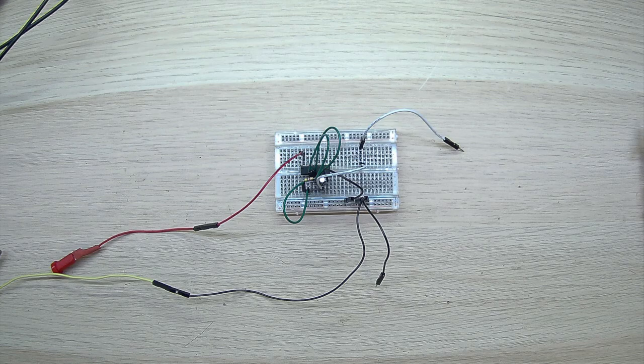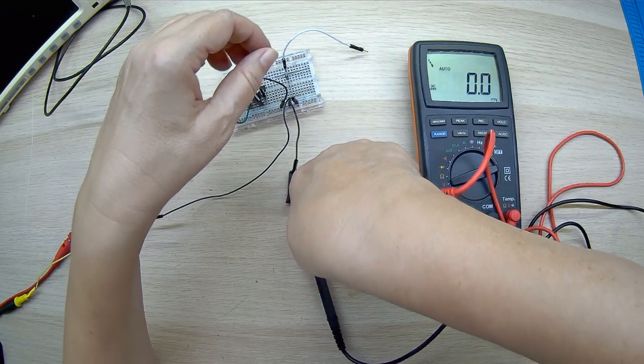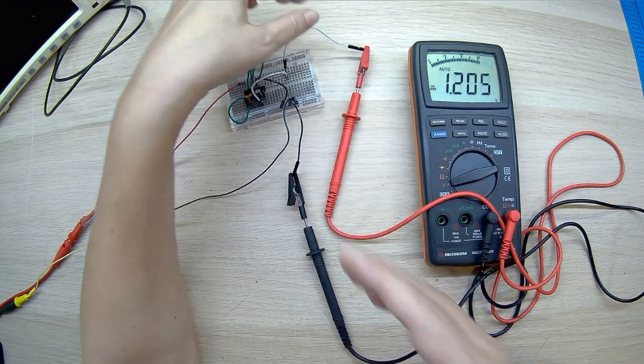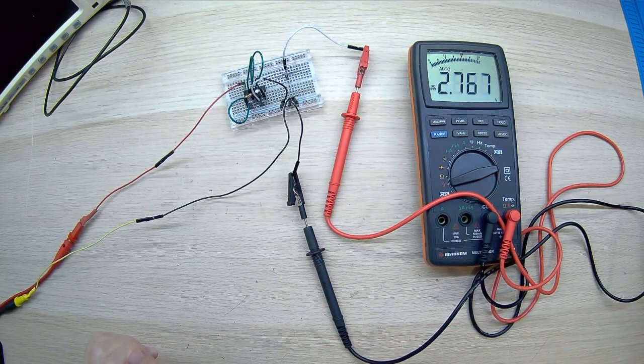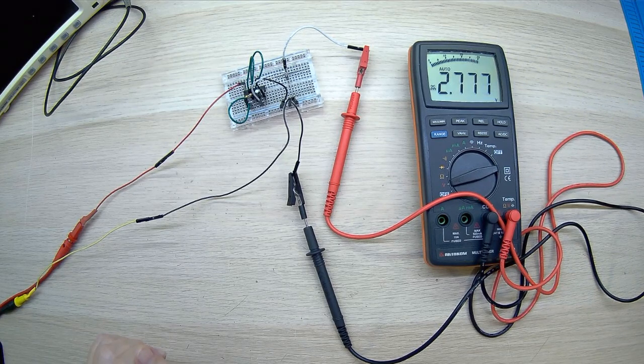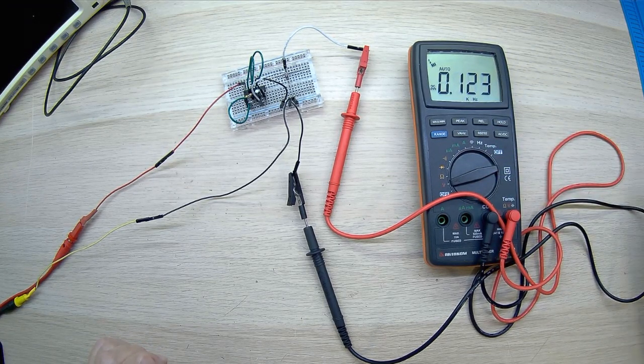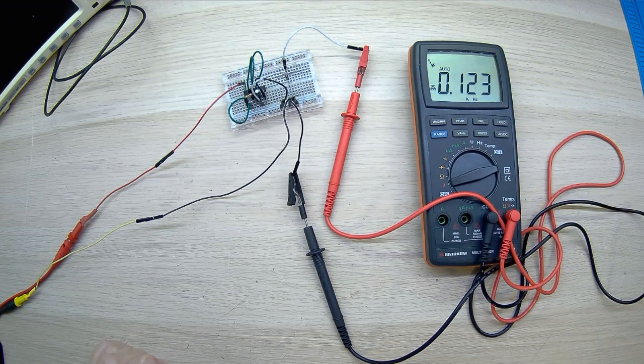We supply power to the assembled circuit and connect a multimeter to the generator output in AC voltage measurement mode. We see an AC voltage value of 2.5 volts. Next, switch to frequency measurement mode and see the value of 123 Hz. Very fast and simple.